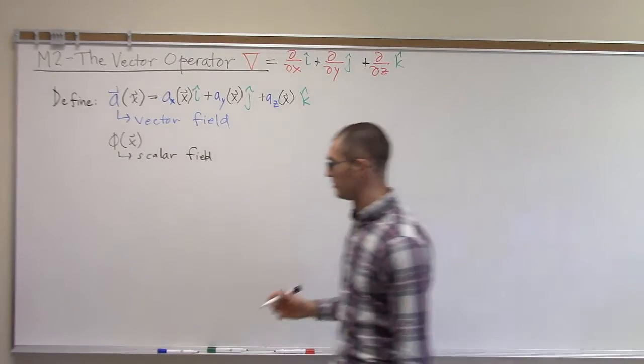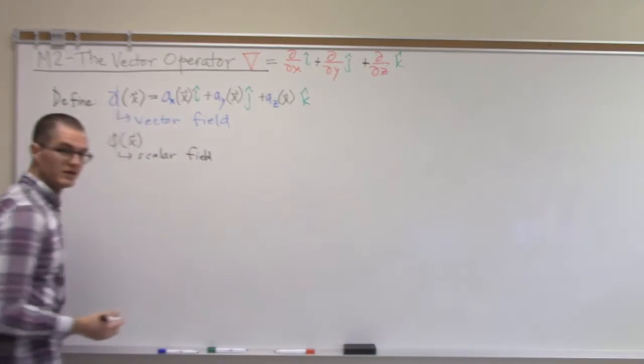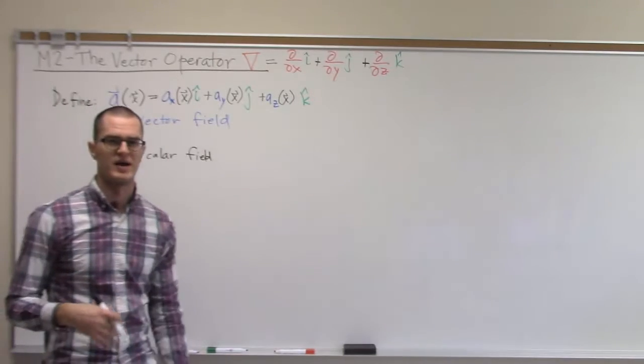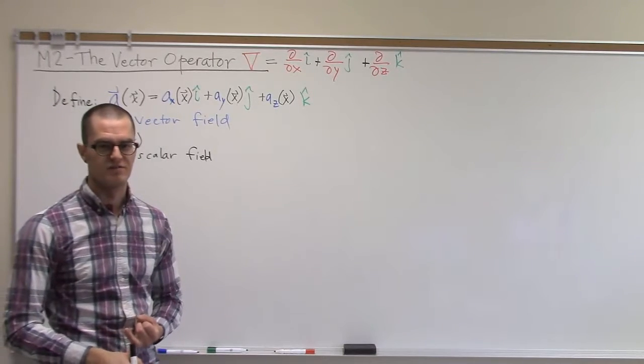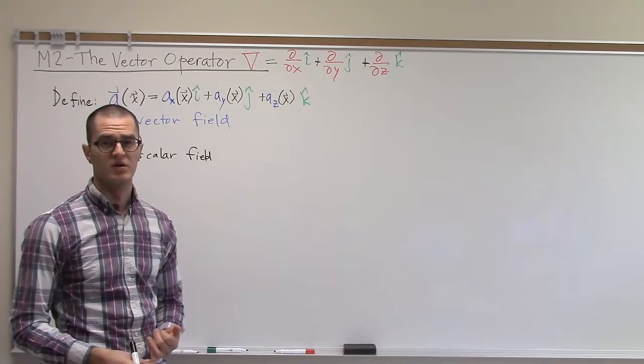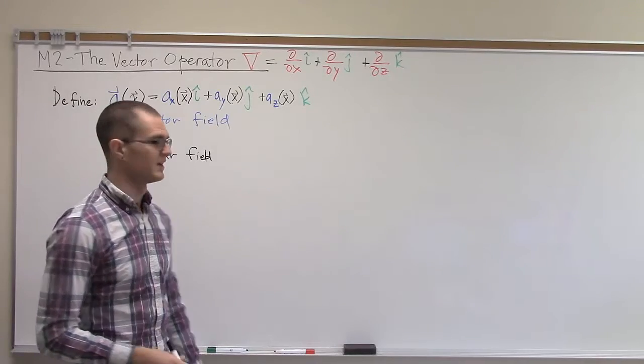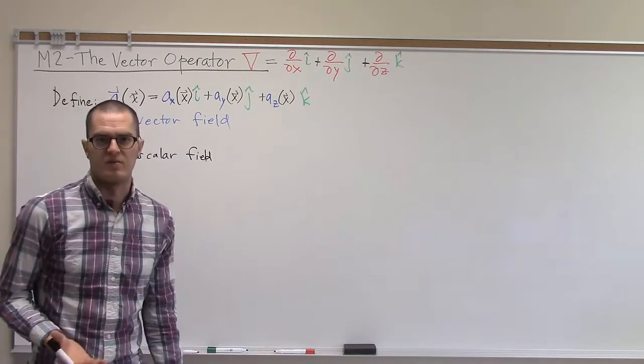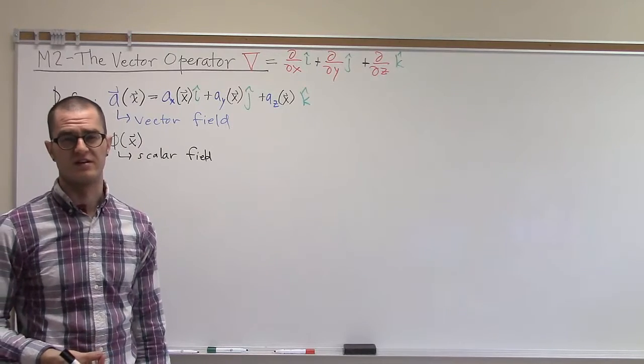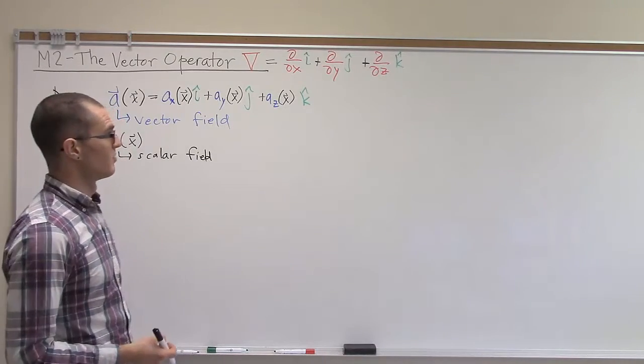Before we jump into that, we looked previously at what happens when we take a dot product of the vector operator with a vector field to get the divergence. Now we'll look at what happens when we take a dot product of the vector operator with itself.